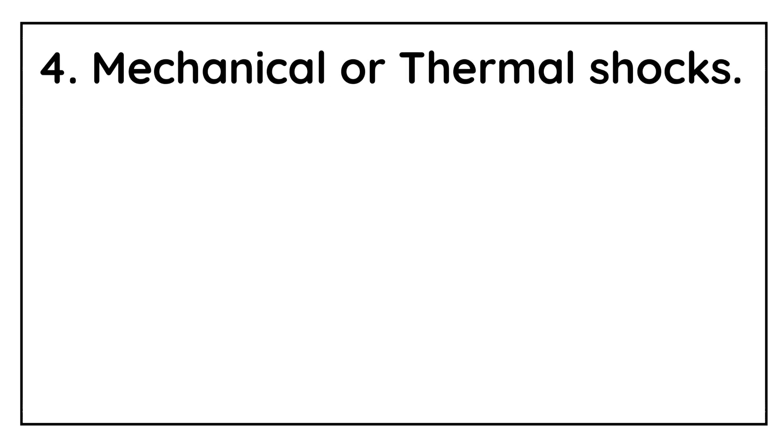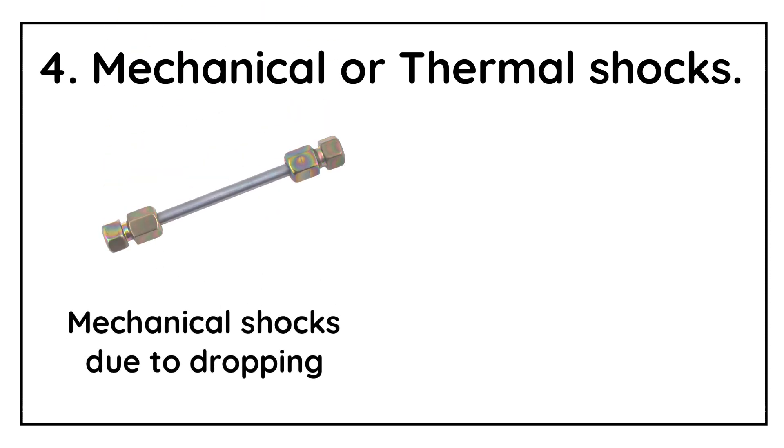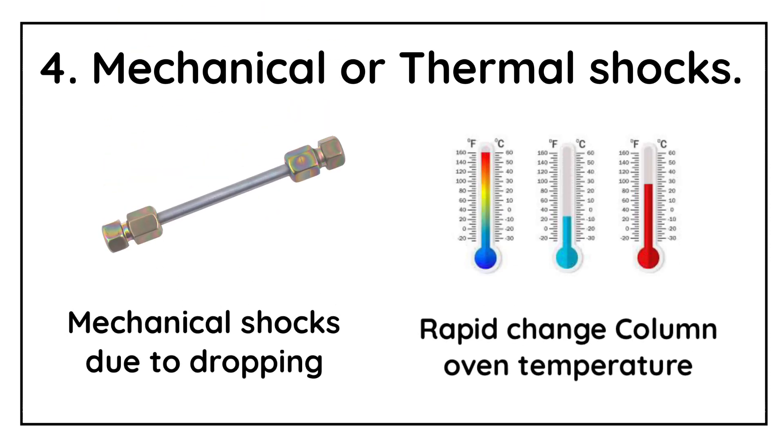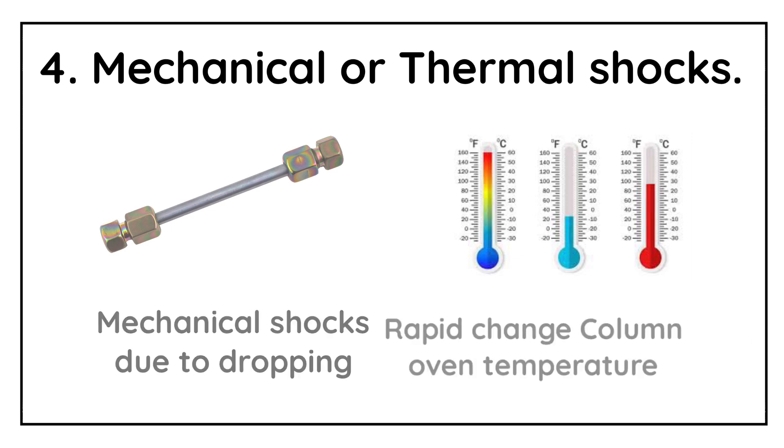Mechanical or the Thermal Shocks. Sudden pressure increase or the thermal shocks should be avoided to minimize the change in the peak shape and the theoretical plate count number. All type of the sudden mechanical shocks should be avoided, for example, dropping of the column on the bench top or the rapidly changing the temperature of the column oven. All these situations may lead to the formation of the voids inside the column surface, due to which there will be peak shape issues or decrease in the theoretical plate count.